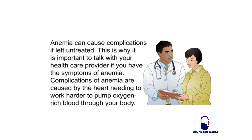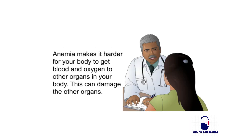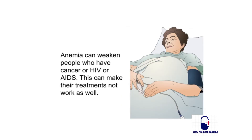Anemia can cause complications if left untreated. Complications are caused by the heart needing to work harder to pump oxygen-rich blood through your body. Anemia can cause arrhythmias — a problem with the rate or rhythm of the heartbeat. Over time, arrhythmias can damage your heart and possibly lead to heart failure. Anemia makes it harder for your body to get blood and oxygen to other organs, which can damage them.